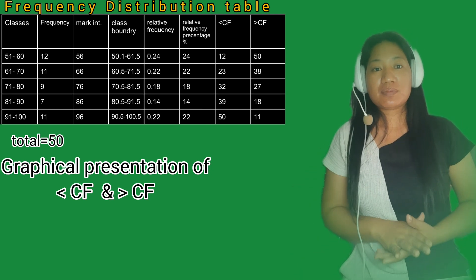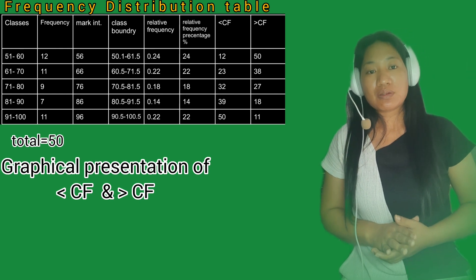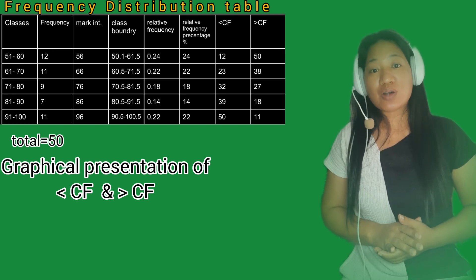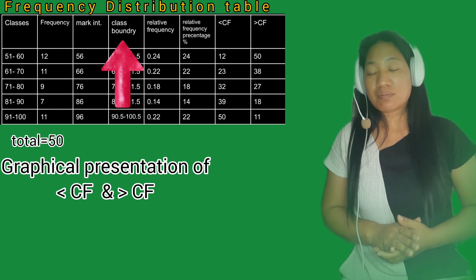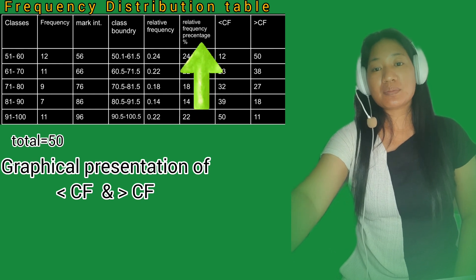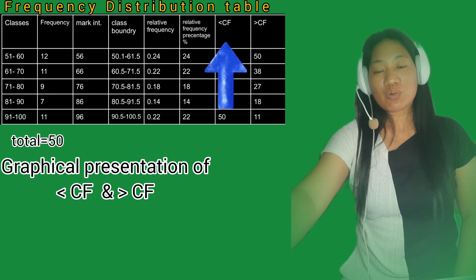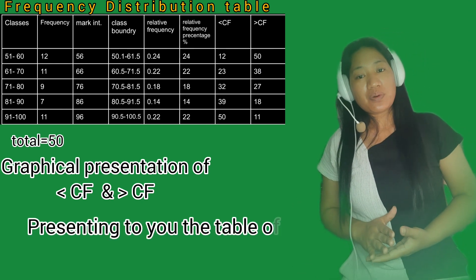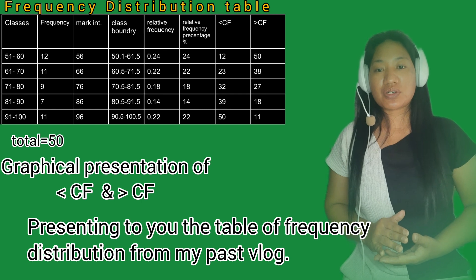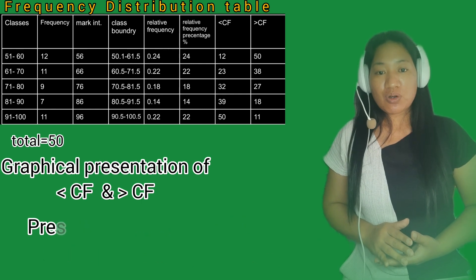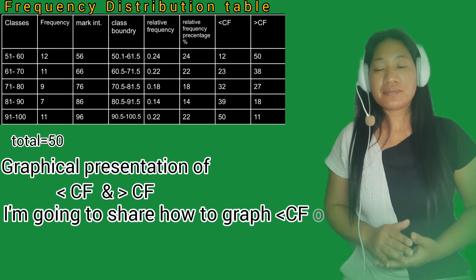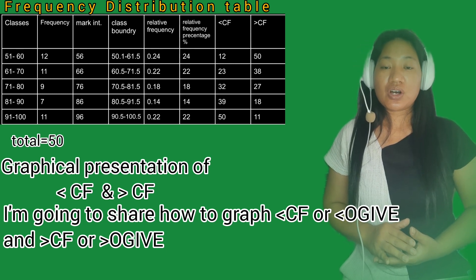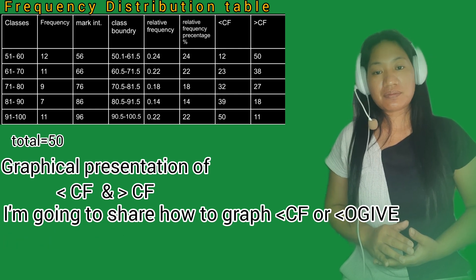If you didn't watch my previous video about the frequency distribution table, you can watch that previous blog. In that blog I discuss step by step how to get frequency, class interval, class boundary, relative frequency, relative frequency percentage, left shift cumulative frequency, and right shift cumulative frequency. So presenting to you the table of frequency distribution from my past blog — what I'm going to share is how to graph the left shift and right shift ogive.